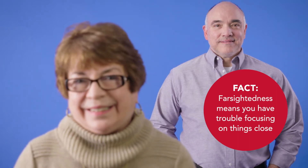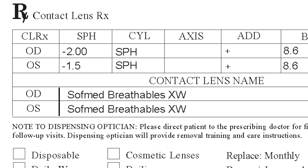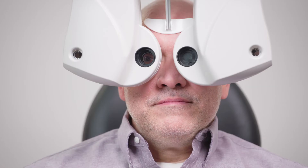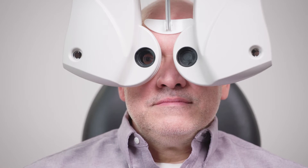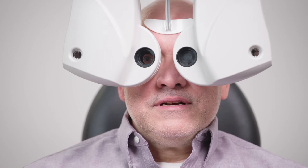Here's an example. If you see the number minus two after OD in the SPH column, it means your prescription calls for two diopters to correct the nearsightedness in your right eye. Two diopters means you're only mildly nearsighted. The higher the number, the more nearsighted you are, so you'll just need a stronger prescription.